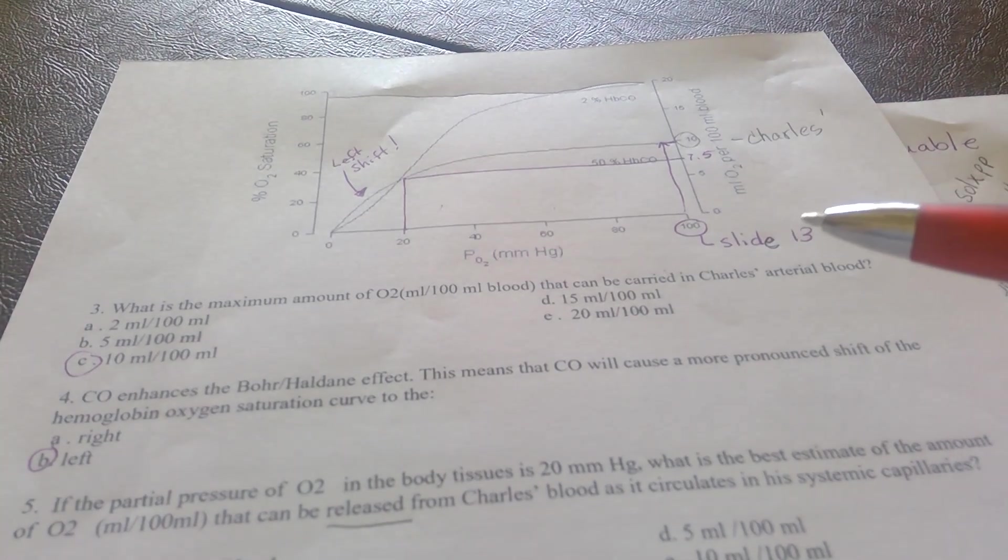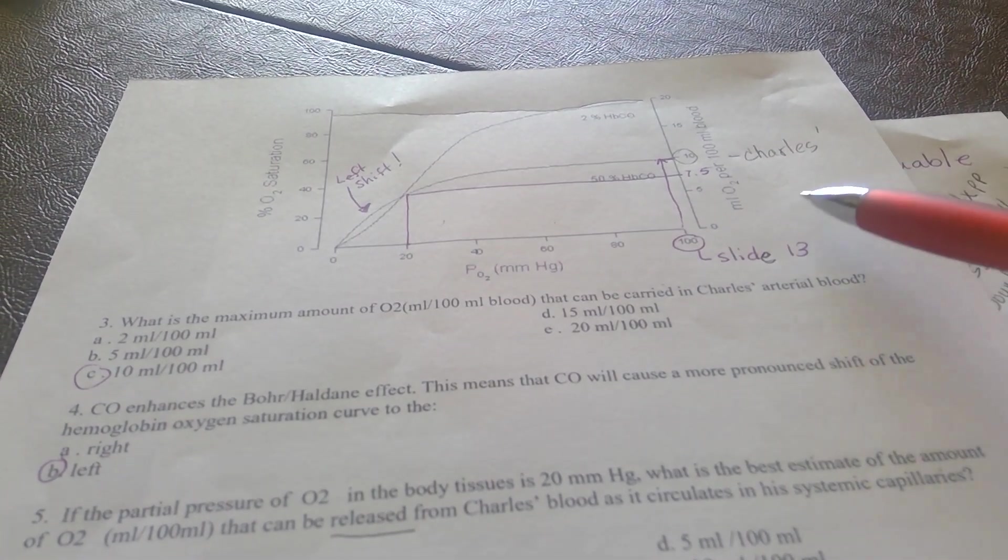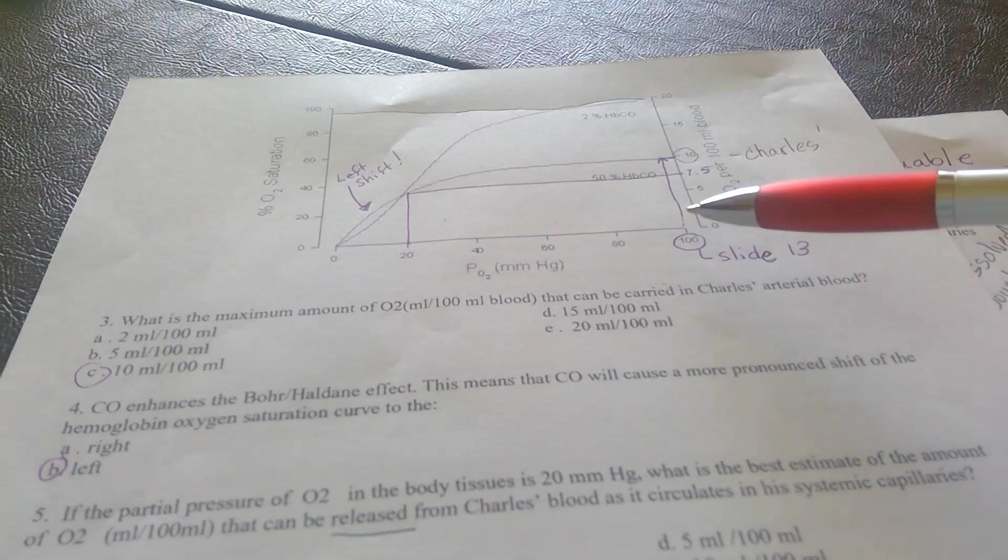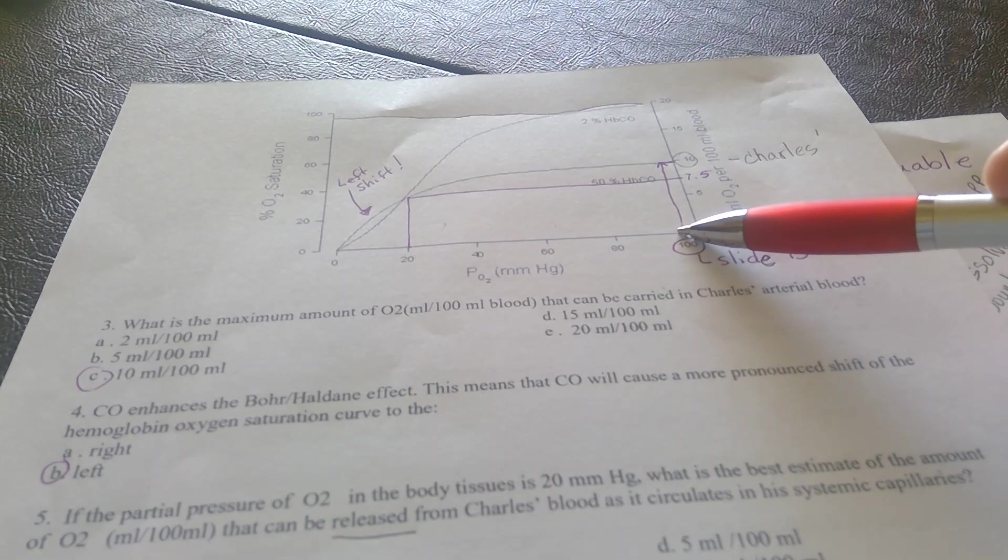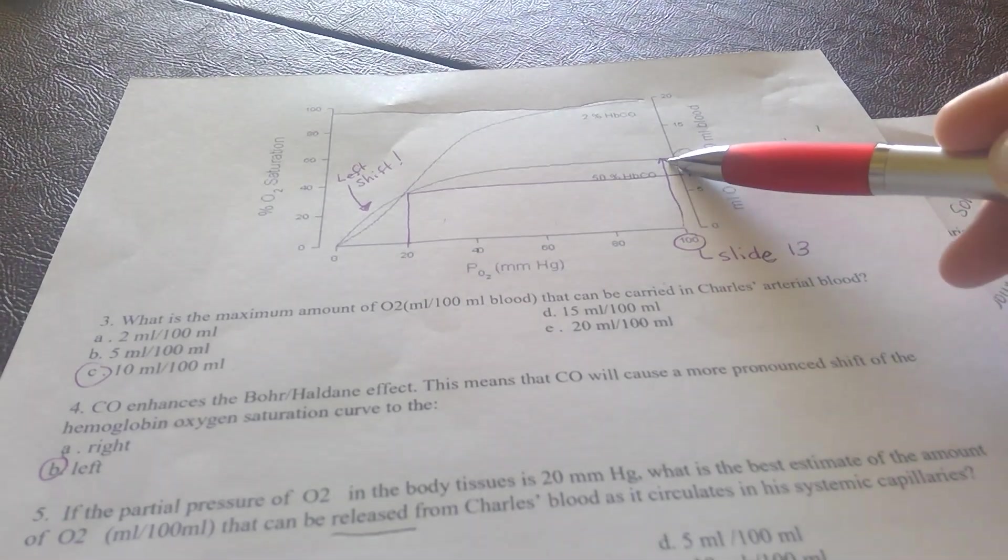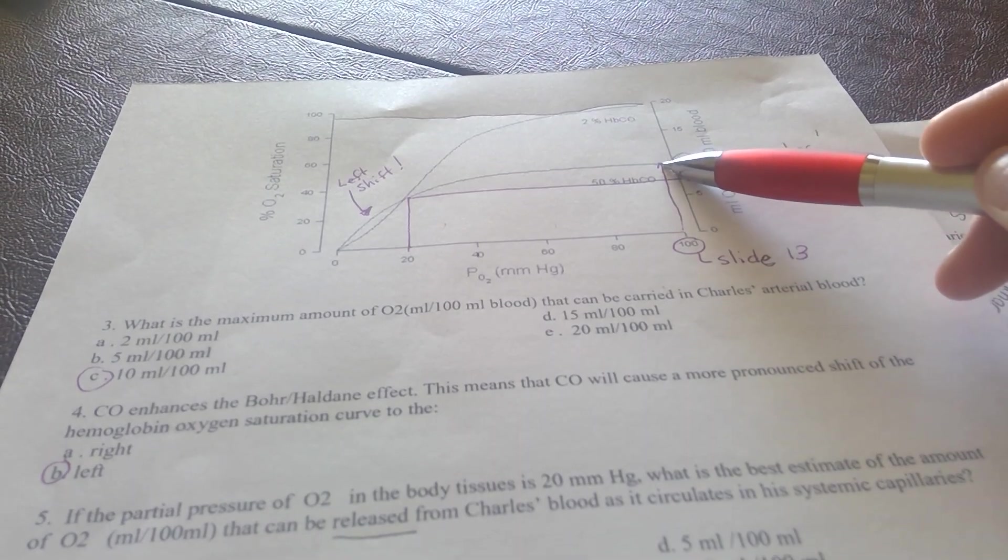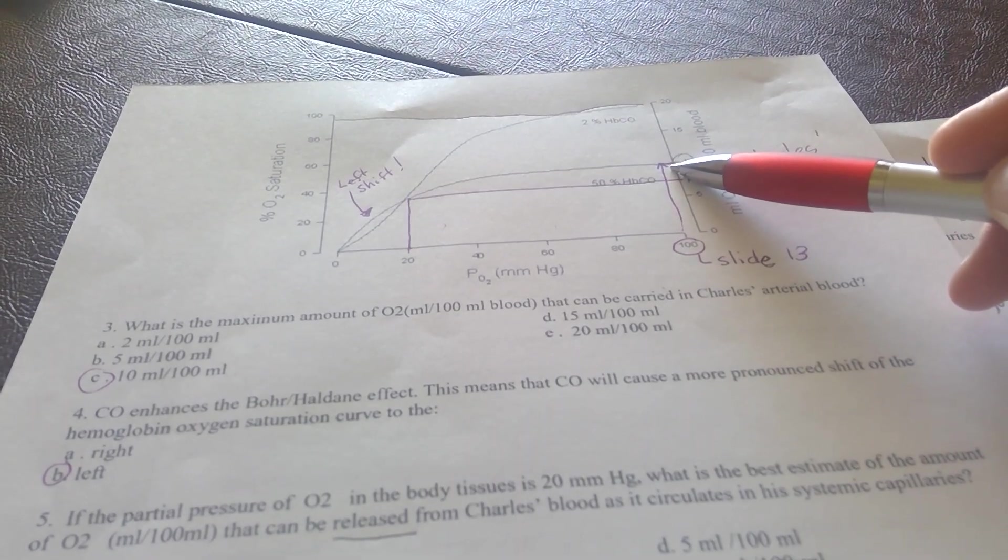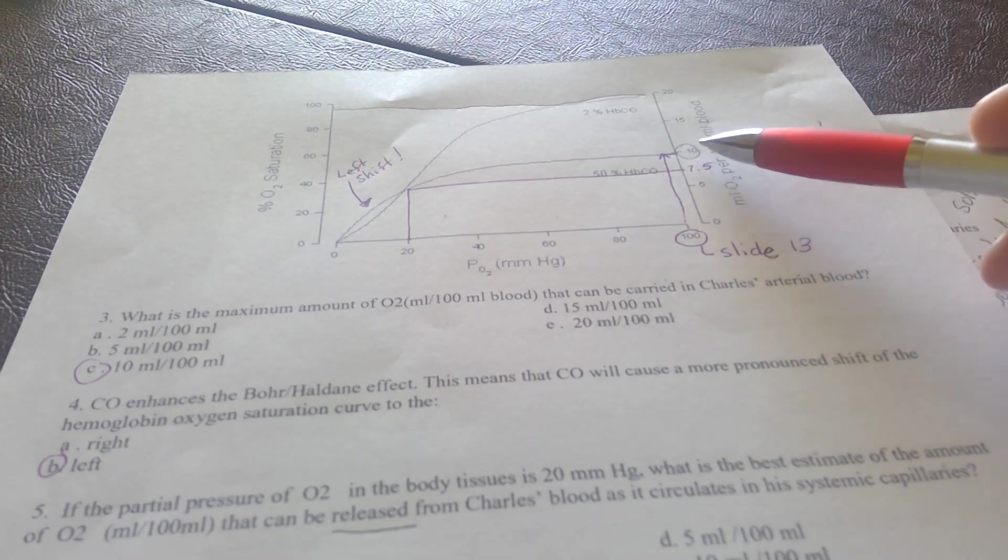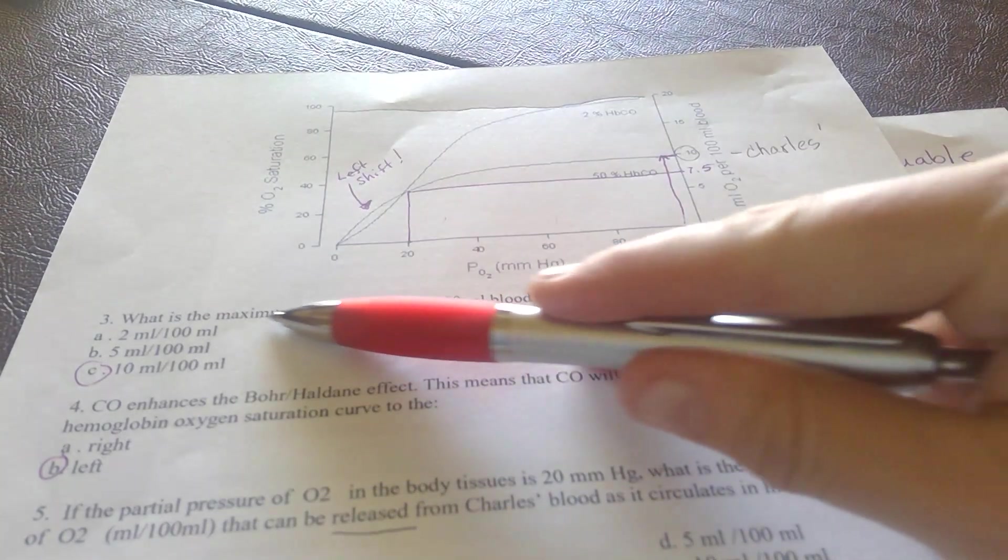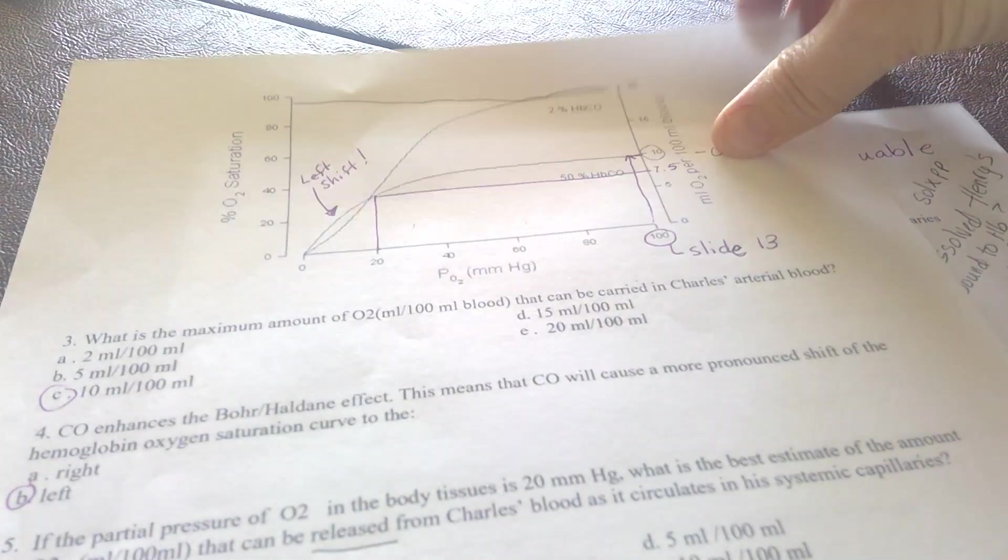What's the amount of oxygen that Charles's blood could actually carry? Again, draw a vertical line from about 95 to 100 millimeters of mercury. Go up until you hit the curve. And it says the quantity that we can actually carry. So now draw a horizontal line to the right. I hit about 10 milliliters for every 100 milliliters of whole blood.